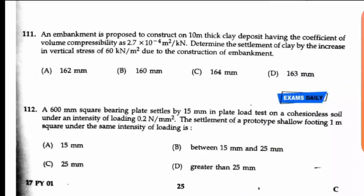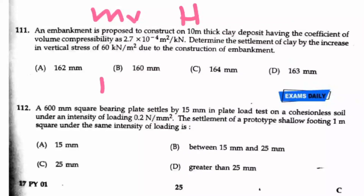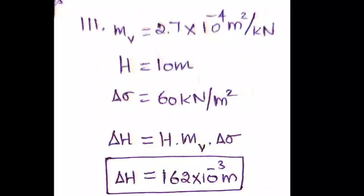Question number 111: An embankment is proposed to construct on a 10-meter thick clay deposit having a coefficient of volume compressibility mv = 2.7 × 10⁻⁴ m²/kN. Determine the settlement of the clay due to the increase in vertical stress (Δσ) from the construction of the embankment. Here h, mv, and Δσ are all given.